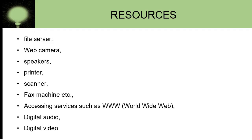Resources are different data and different devices shared in the network. It can be a file server connected in a network, a web camera connected to your laptop, speakers, or printers. A single printer can be kept in an office and shared by many people. Suppose there are five systems in a company — all five users can access the printer and take printouts, but it is physically connected to only one system.